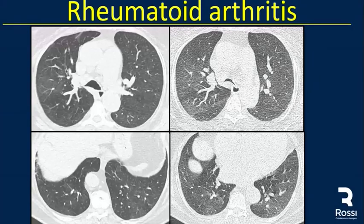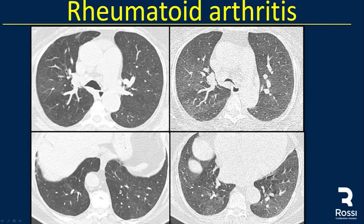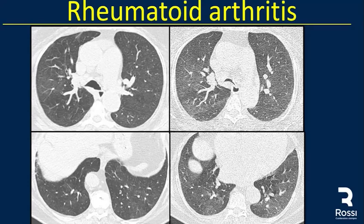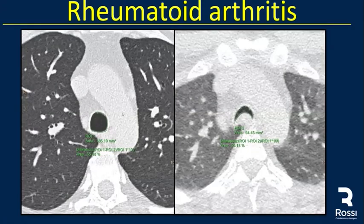Another rheumatoid arthritis case with subtle mosaic attenuation pattern — areas of high and low attenuation. The expiratory CT shows areas of air trapping with diminished vascularity, and we can also see tracheobronchomalacia. The expiratory CT demonstrates reduction in the area of the trachea in this patient with tracheobronchomalacia.